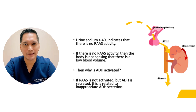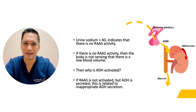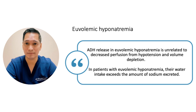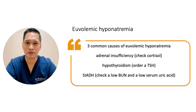A urine sodium of more than 40 indicates that there is no RAS activity. If there is no RAS activity, the body is not sensing a low blood volume — so why is ADH activated? If RAS is not activated but ADH is secreted, this is related to inappropriate ADH secretion. ADH release in euvolemic hyponatremia is unrelated to decreased perfusion from hypotension and volume depletion. In patients with euvolemic hyponatremia, water intake exceeds the amount of sodium excreted. The three common causes are adrenal insufficiency — check a cortisol level — hypothyroidism — check a TSH — and SIADH — check a low BUN and a low serum uric acid.